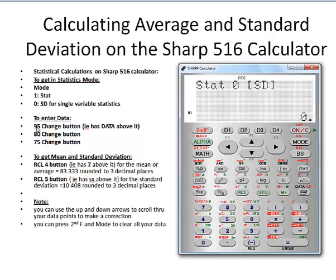So our three data points are 95, 80, and 75, so we'll enter each of those: 95, data, 80, data, and 75, data.